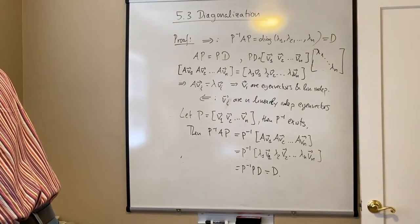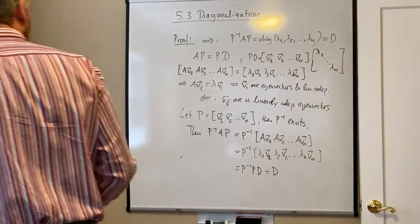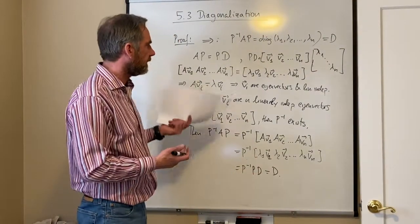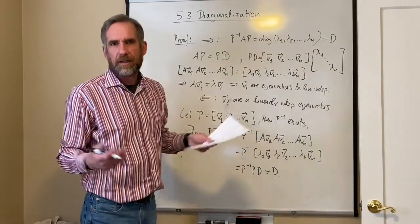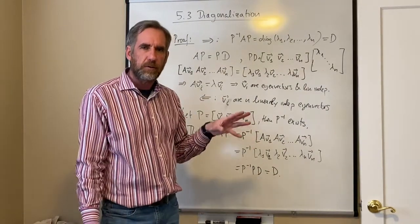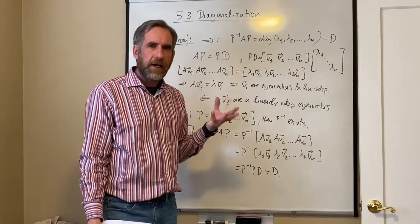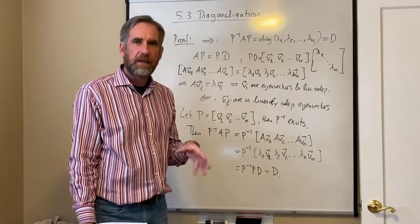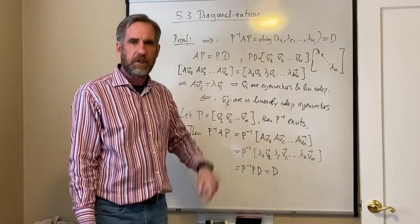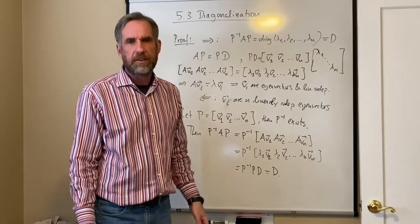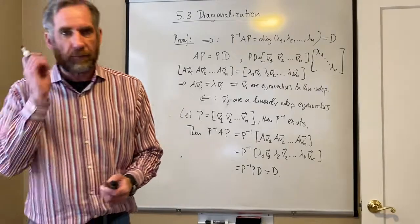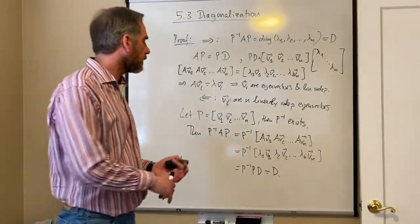This is a criterion for being able to diagonalize a matrix. If that criterion isn't satisfied, we don't have a chance. I want to point out a previous result: if all eigenvalues are distinct, then the eigenvectors will be linearly independent, and in that situation we can also diagonalize the matrix. That covers most of the theory for this section.